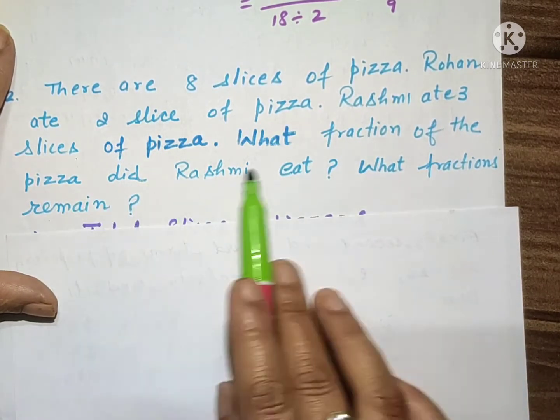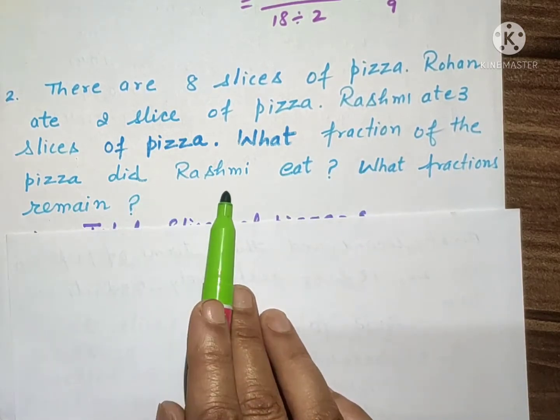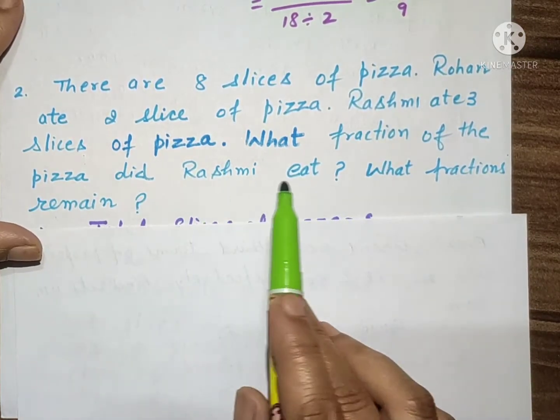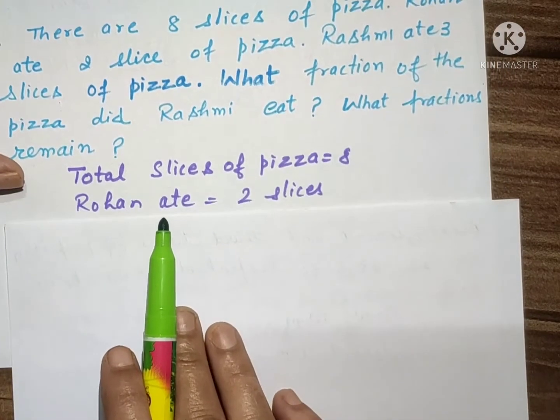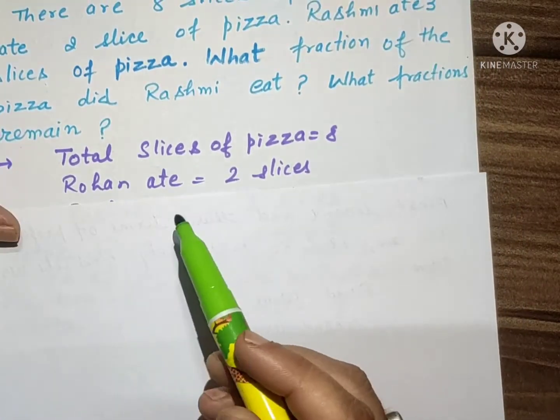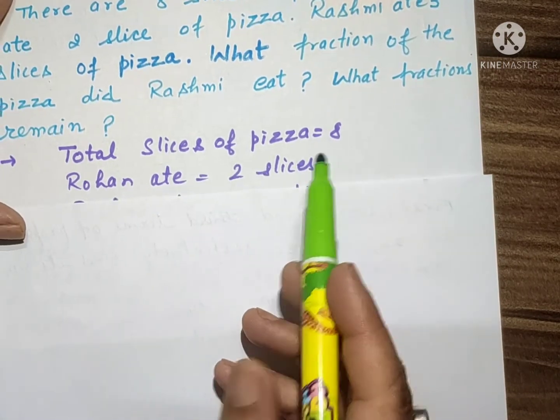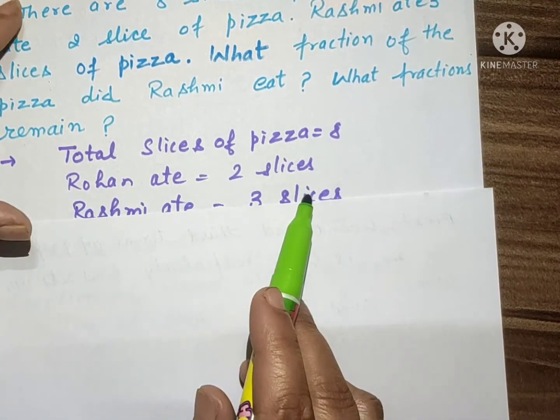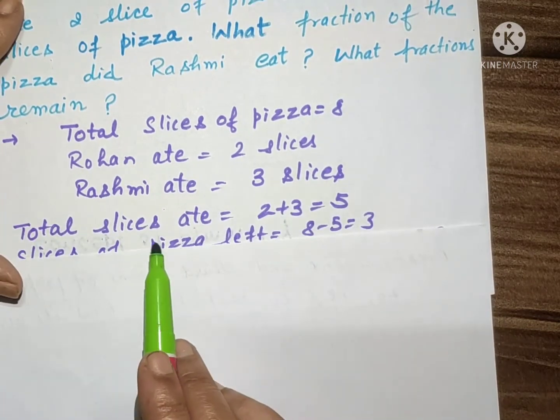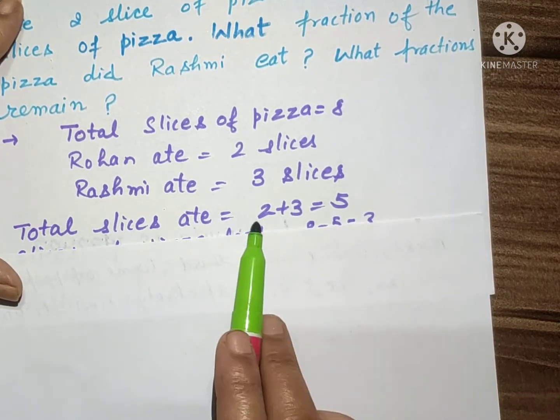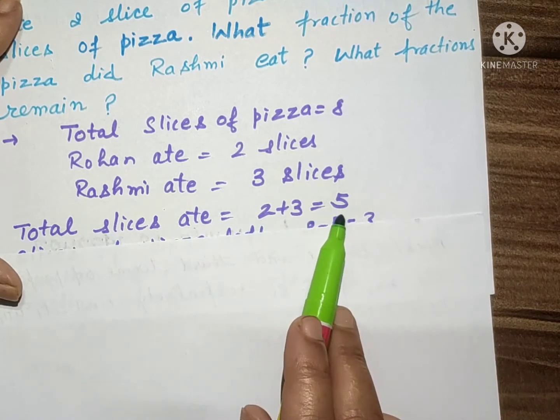Rohan ate two slices, Rashmi ate three slices. Total slices of pizza: eight. Total khaai kitni? Two plus three, that is five slices.